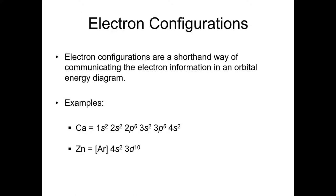For zinc, we can use what's called the noble gas shorthand and simply write it as [argon], 4s2, 3d10. So I've given you the notations that correspond to these elements — now let's figure out how we got there. The first thing is to take something like 4s2 and explain what that means.